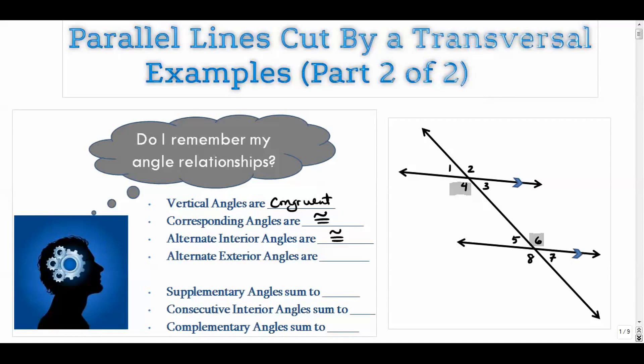Alternate exterior angles also are congruent. One and seven. Alternate meaning they're on different sides of our transversal. And exterior, of course, meaning they're on the outside of the parallel lines. And those are also congruent.